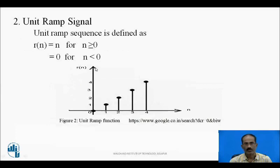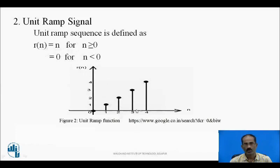Next is the unit ramp signal. The unit ramp sequence is represented by r(n) and defined as r(n) = n for n ≥ 0, and 0 for n < 0. Along the x-axis is n and along the y-axis is r(n). For n = 0, its value is 0 at the origin. For n = 1, r(1) = 1; for n = 2, r(2) = 2; for n = 3, r(3) = 3, and so on from 0 to +infinity. On the negative side, r(n) = 0.